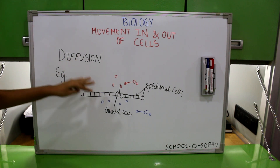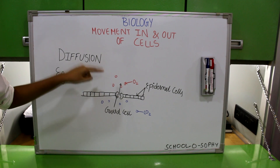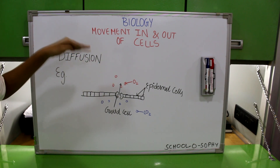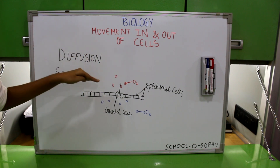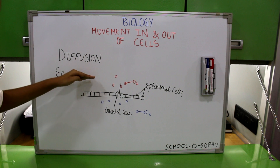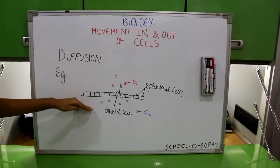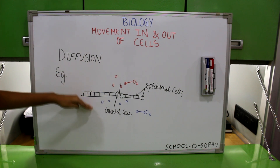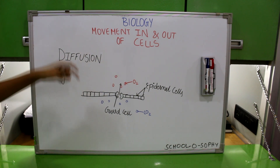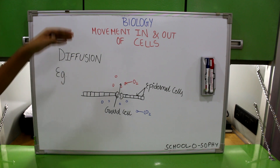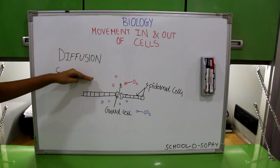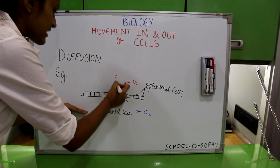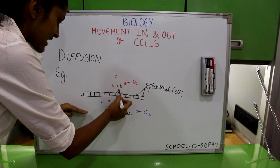As mentioned before, oxygen is a waste product of photosynthesis. So there is more concentration of oxygen inside the cell and less concentration of oxygen outside the cell. Therefore, oxygen diffuses from higher concentration — inside the cell — to lower concentration — outside the cell.